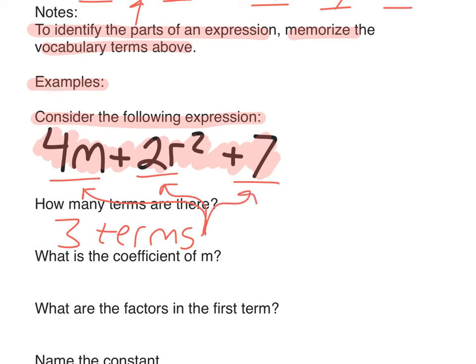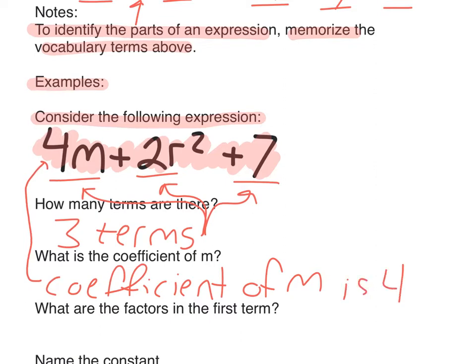What is the coefficient of M? So, coefficient of M. You might want to write down the word coefficient and maybe you're actually going to have to write down coefficient of M and draw to the coefficient of M. That's four. That's the number that's multiplying M.